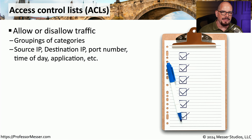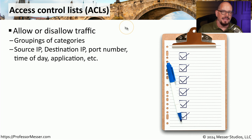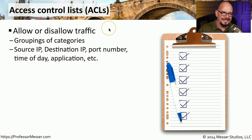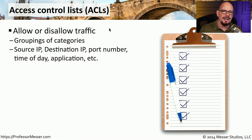One common way to limit the type of traffic that can traverse the network is by using an ACL, or an access control list. This is a generic term that describes a list of traffic that is allowed and traffic that is disallowed. It's often grouped with different categories so that you can create very complex combinations.